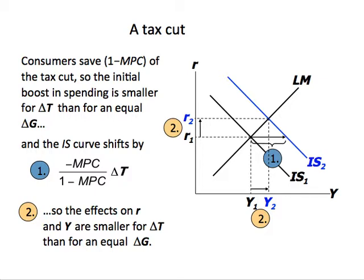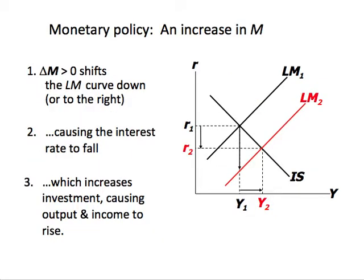Now let's look at monetary policy. Suppose that the Fed increases the money supply. We have seen before that if there is an increase in money supply, the LM curve shifts to the right as well. If it shifts to the right, it will lead to a fall in equilibrium interest rate to R2 and an increase in equilibrium output to Y2. The economic intuition is that banks are now holding more money than they would like, so they cut down their interest rate to attract more borrowers.